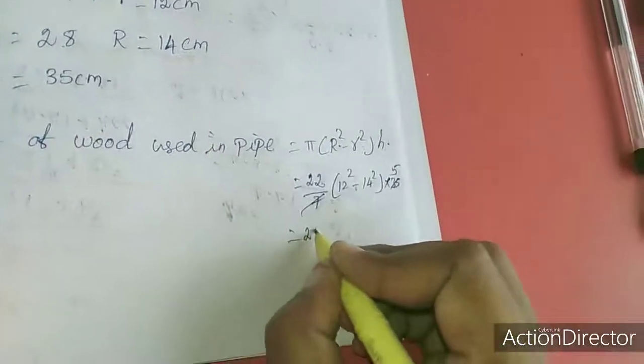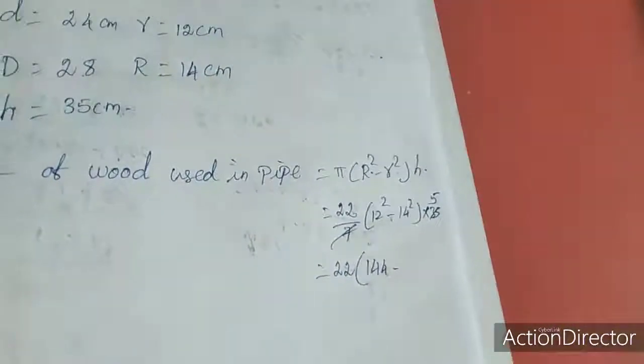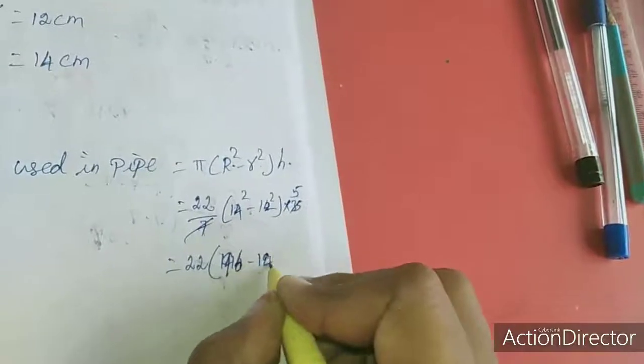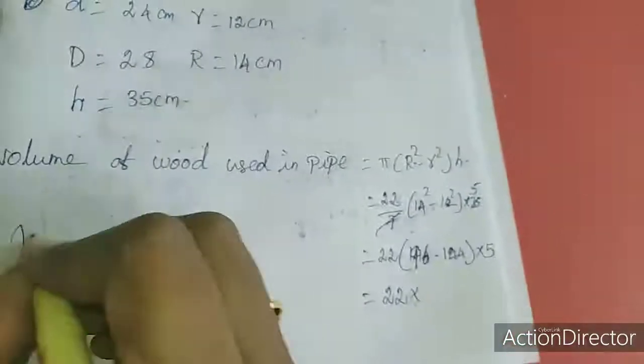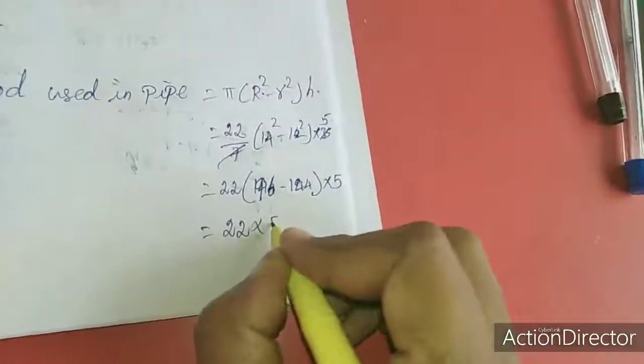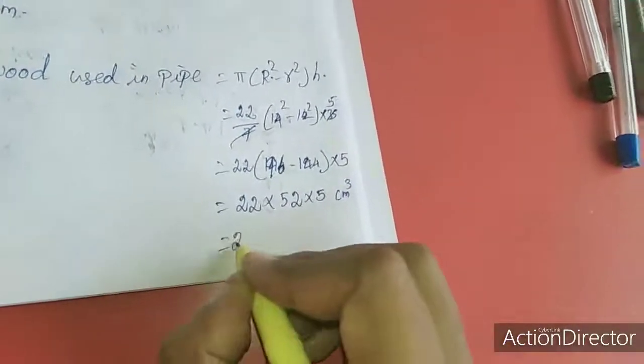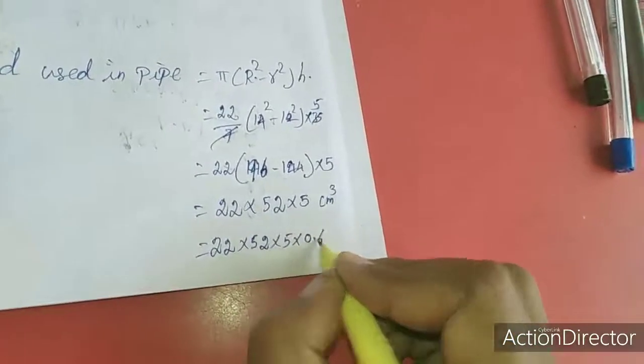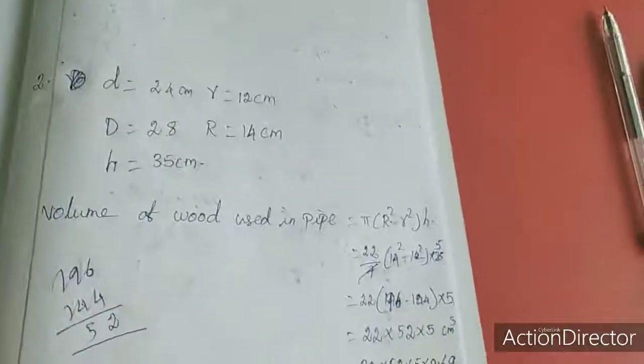Calculating: 14 squared minus 12 squared, that's 196 minus 144, which is 52. So 22 times 52 times 5, which gives us the volume. For the mass, multiply by 0.6 grams per cubic centimeter. This is the answer for the second problem.